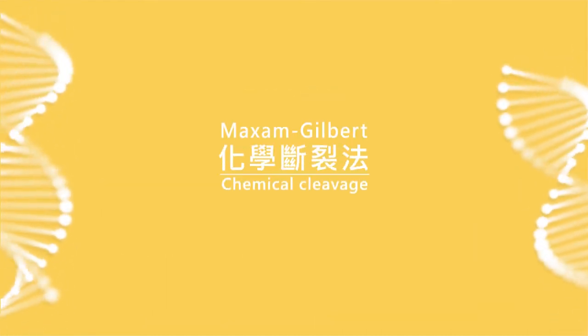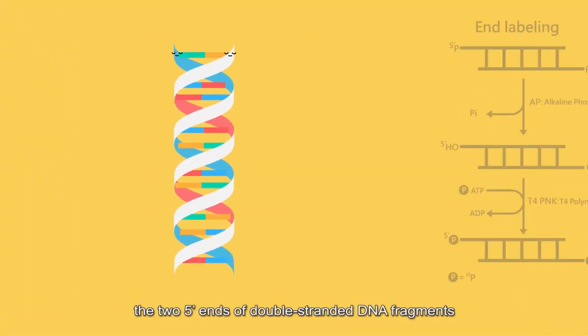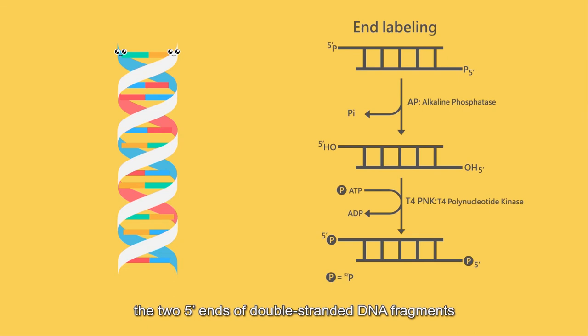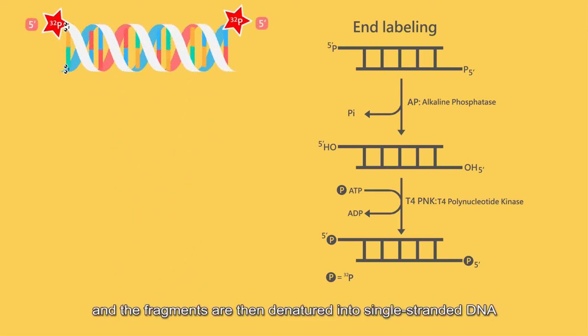Maxim-Gilbert chemical cleavage method: In this method, the two five prime ends of double-stranded DNA fragments are labeled with radioactive phosphorus-32 and the fragments are then denatured into single-stranded DNA.